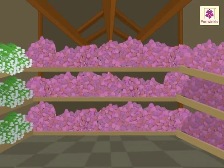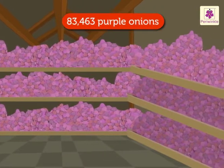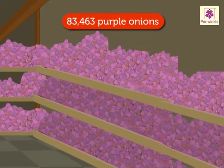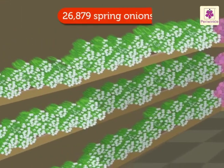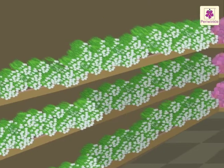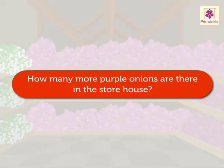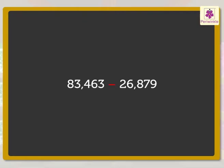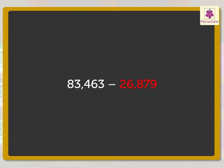Look there. It is the storehouse. It has 83,463 purple onions and 26,879 spring onions. Let us find out how many more purple onions are there in the storehouse. We can get the answer by finding the difference between 83,463 and 26,879.